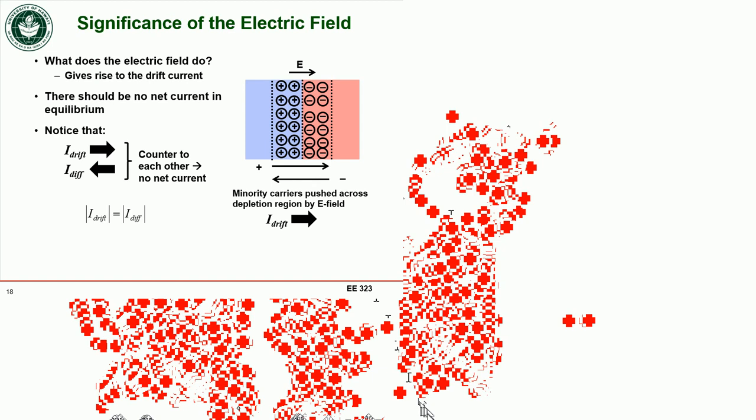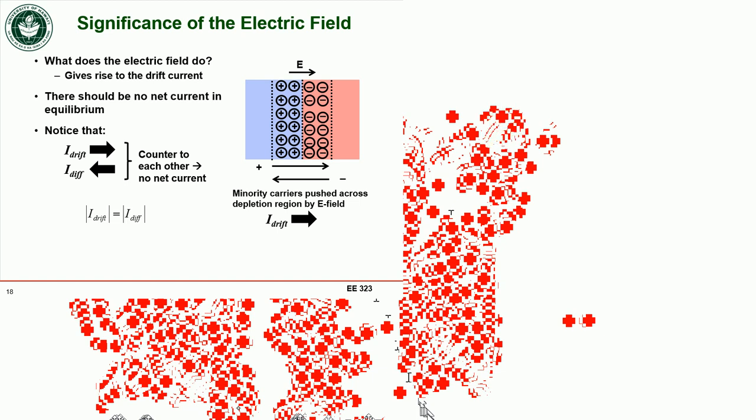What happens is: if there are free charges outside the depletion region moving around and they enter it, they experience the electric field. The electric field exerts a force on those charges, pushing or pulling them through the depletion region to the other side of the junction. This movement of charge constitutes another current — the drift current — and it's driven by the electric field, in the opposite direction to the diffusion current.